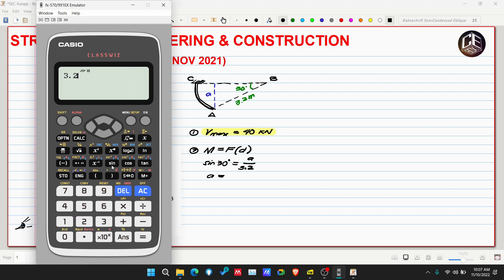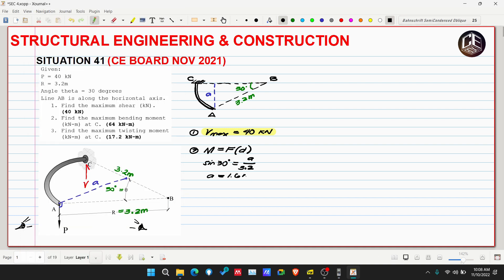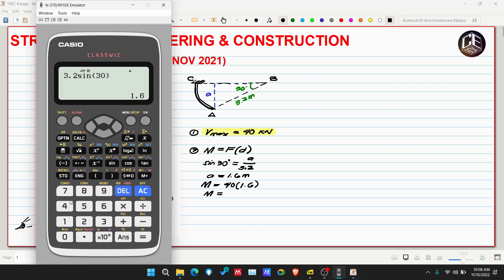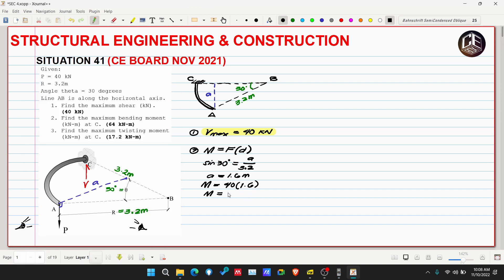Sine of 30 degrees, this is 1.6 meters. So therefore, our moment is equivalent to force f, which is force P of 40 kilonewtons, multiplied by moment arm a of 1.6. So 64 kilonewton meters.